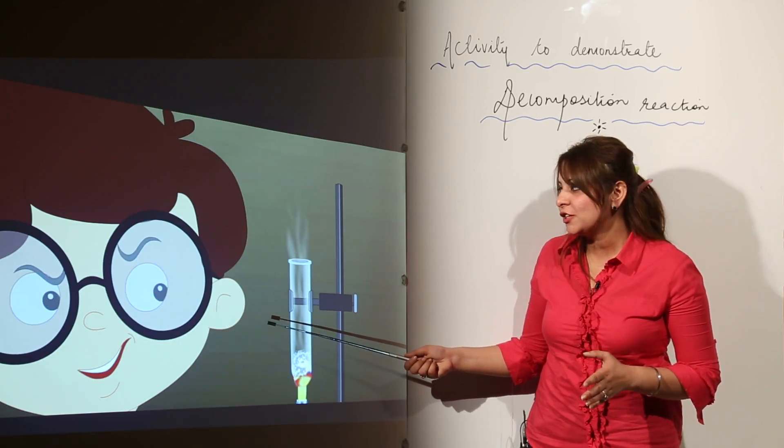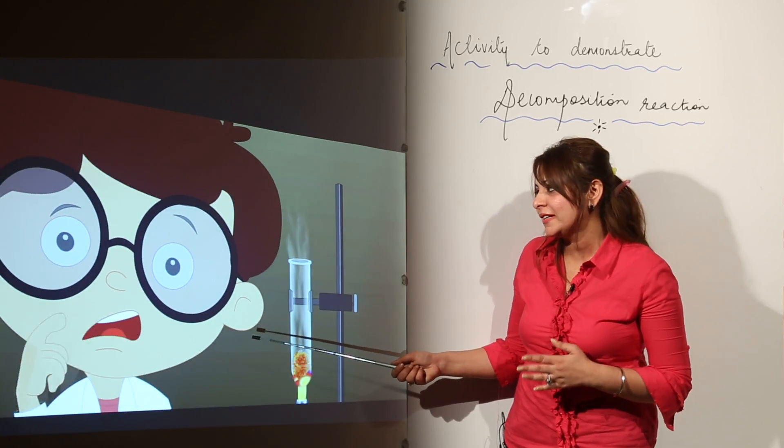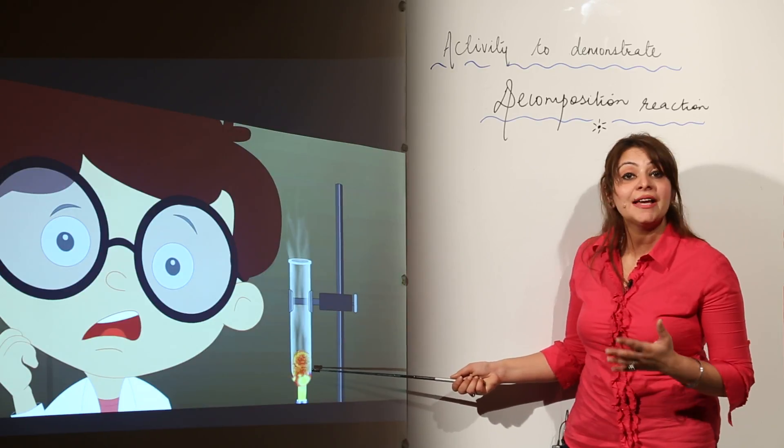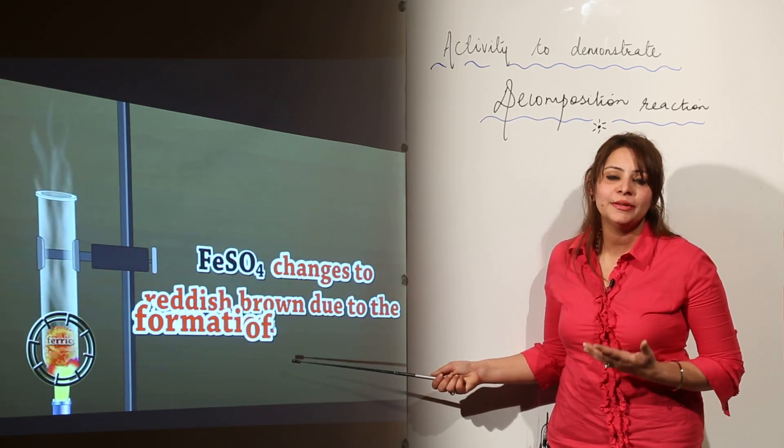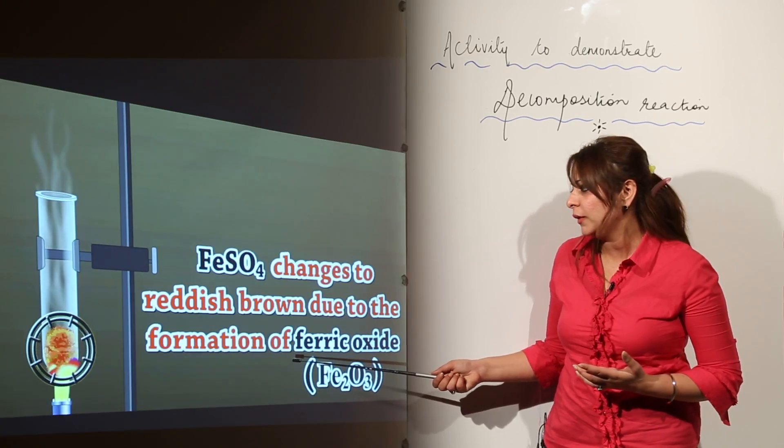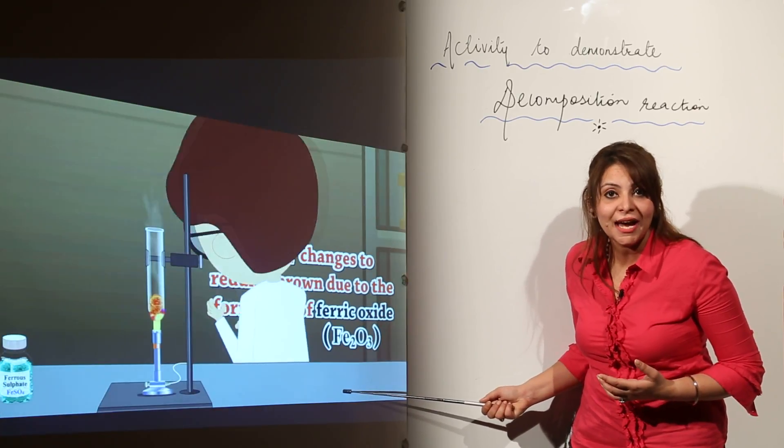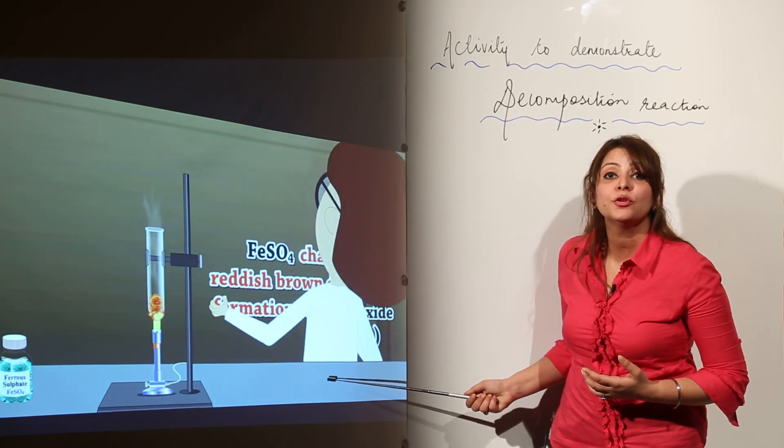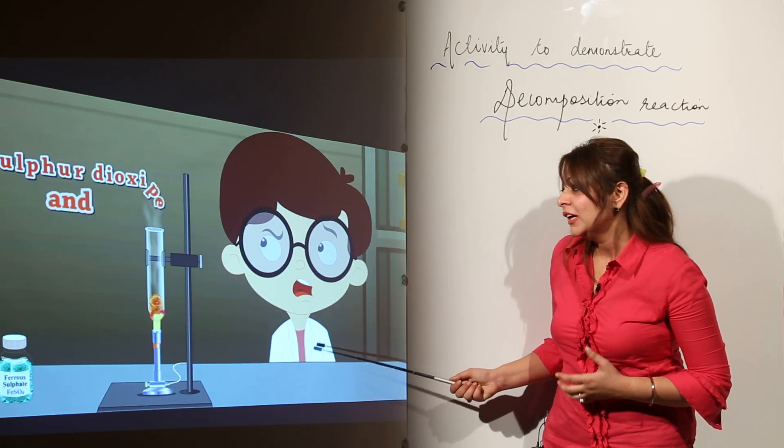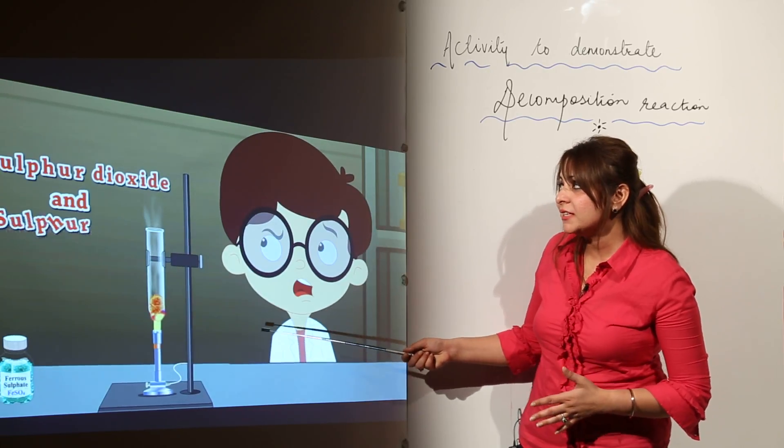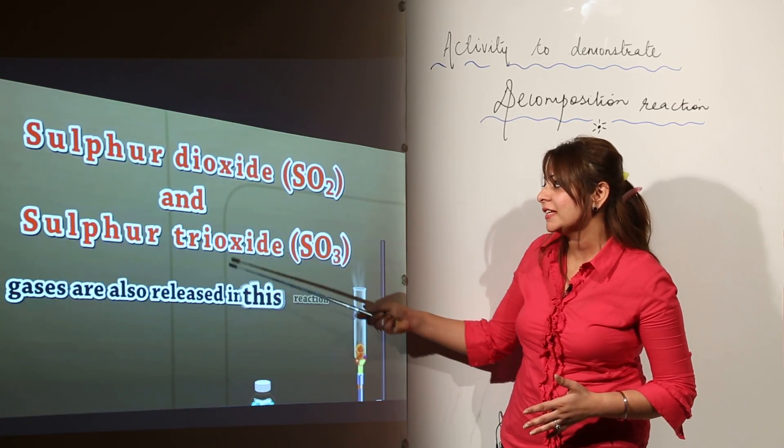But this is not the only noticeable change. Look carefully at the activity. With the passage of time it turns reddish brown. The reason is the formation of ferric oxide. The ferrous sulfate decomposed into ferric oxide and the color is reddish brown. We also get gases, sulfur dioxide and sulfur trioxide, which are liberated.